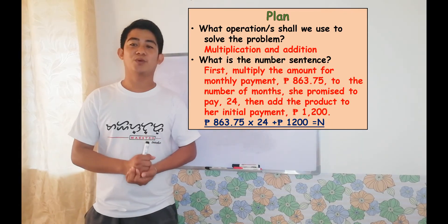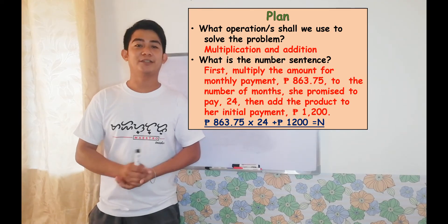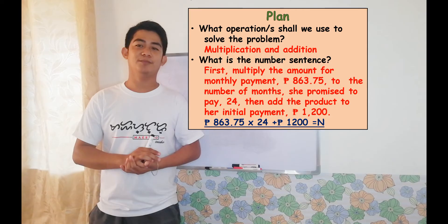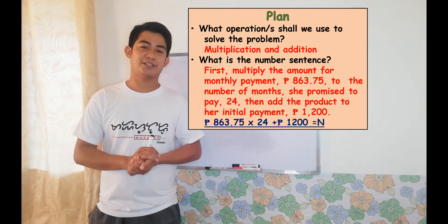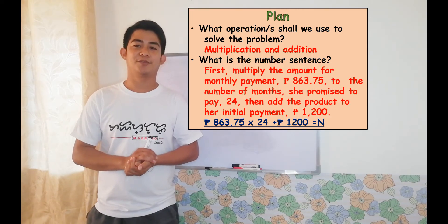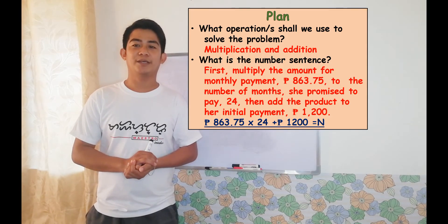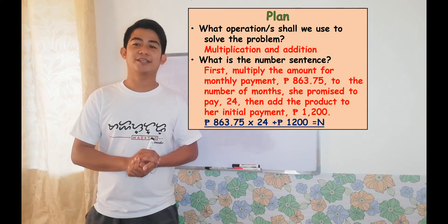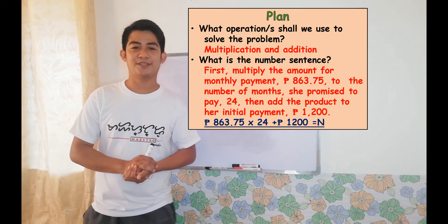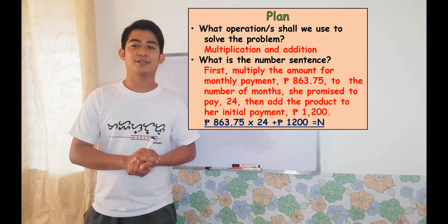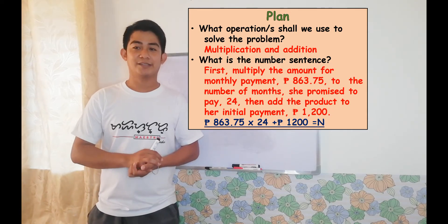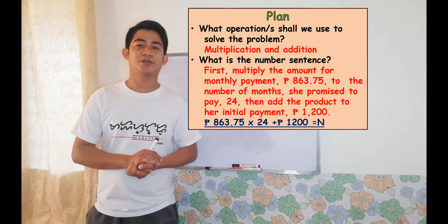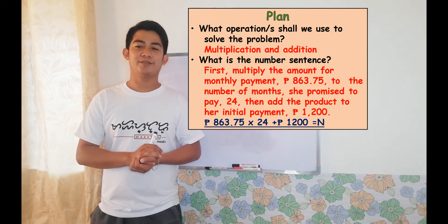The next part of Plan is: what is the number sentence? How are we going to solve it, or what will be our equation for this problem? First, we're going to multiply the amount for the monthly payment, which is 863 pesos and 75 centavos, by the number of months, which is 24 months. Then, we're going to add the product to her initial payment of 1,200 pesos.